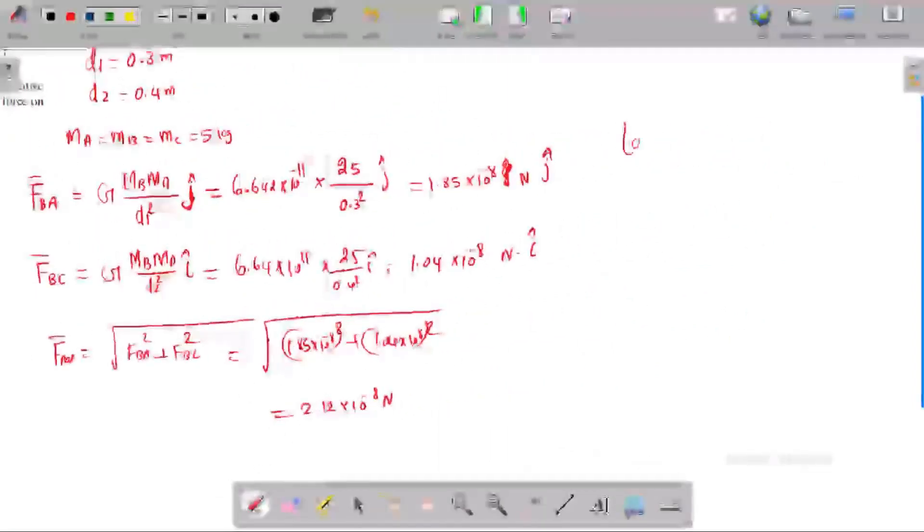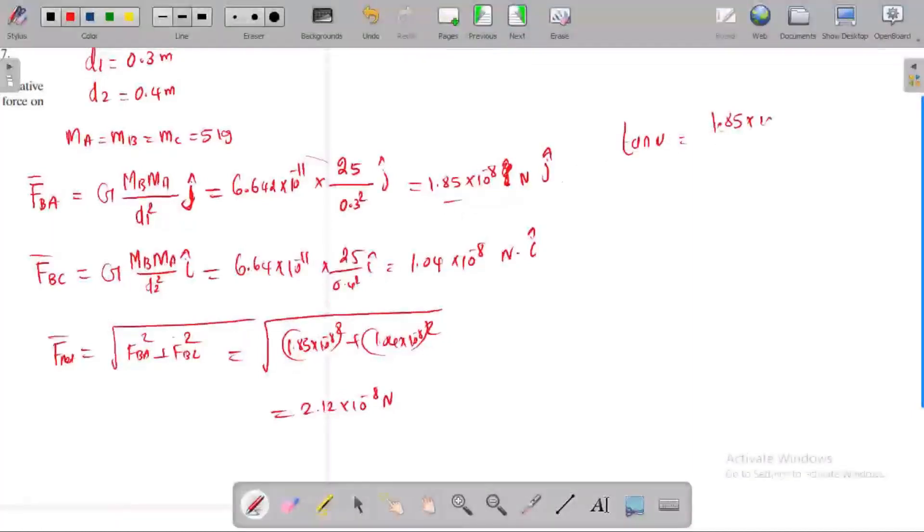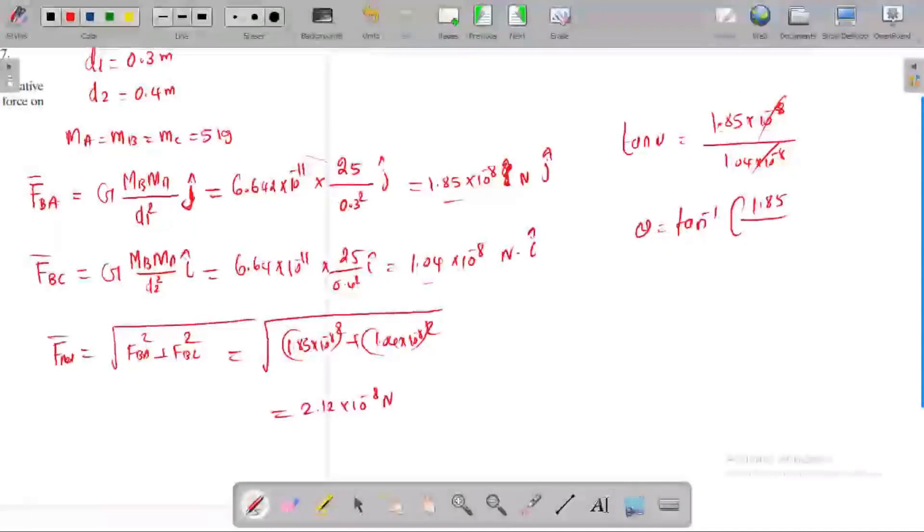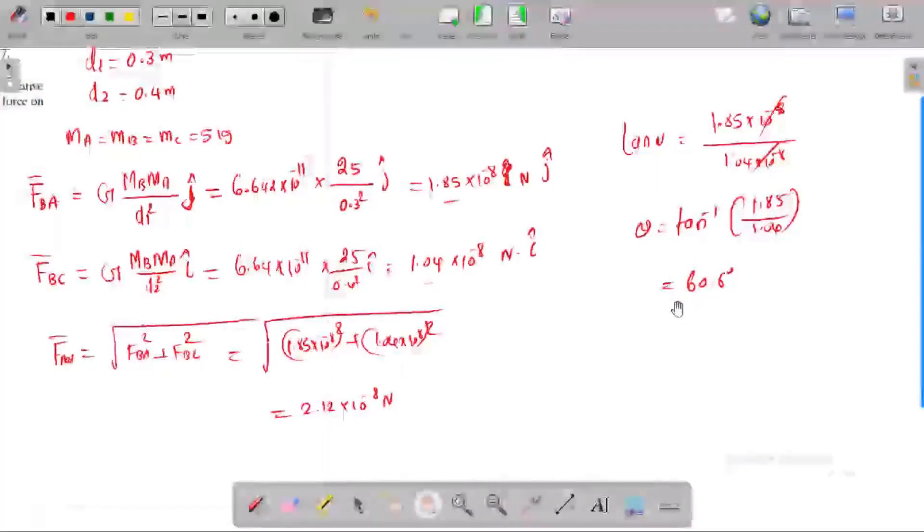Direction: tan theta equals vertical component divided by horizontal component. This is vertical, this is horizontal. Theta equals tan inverse... The answer is 60.60 degrees.